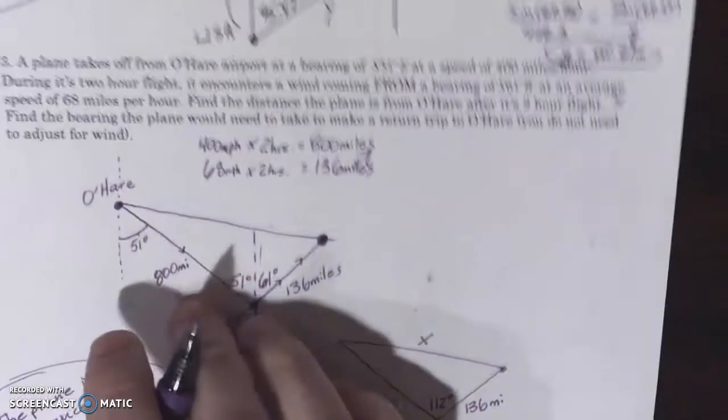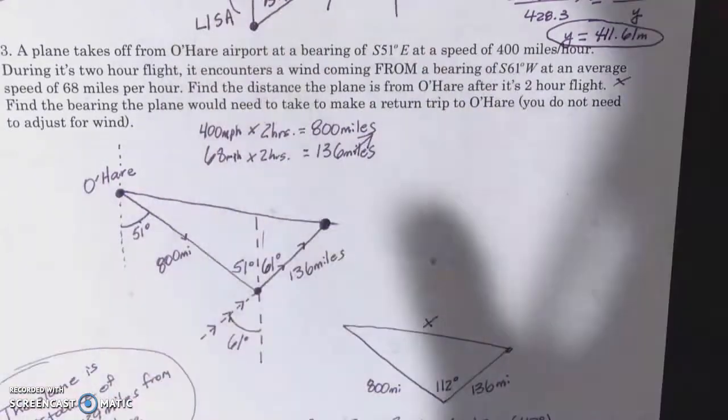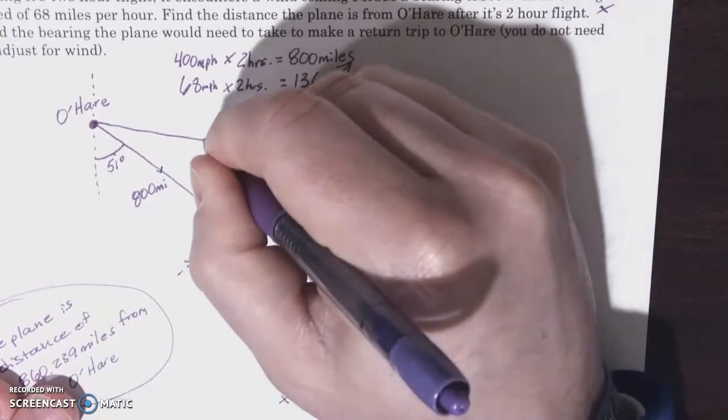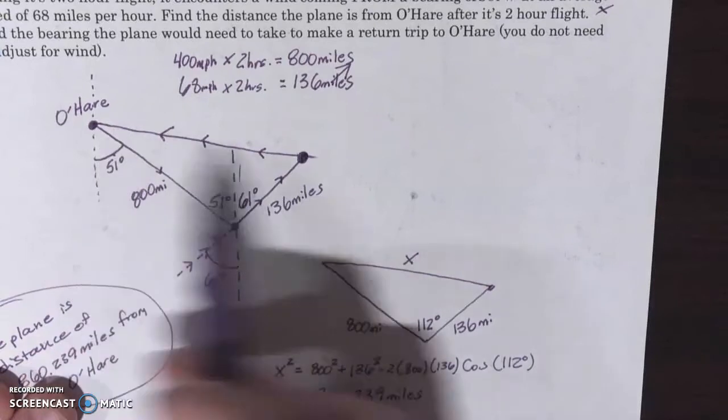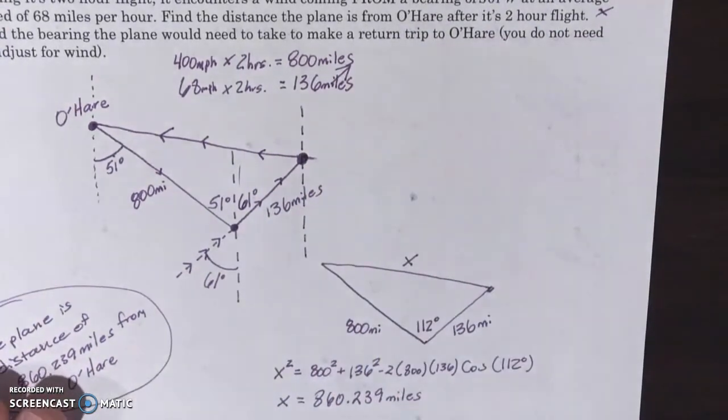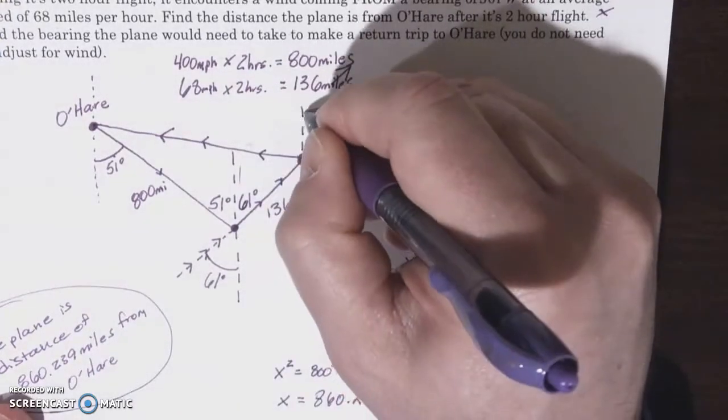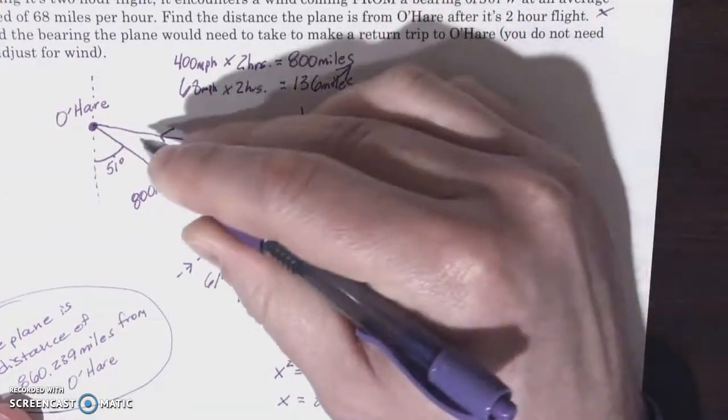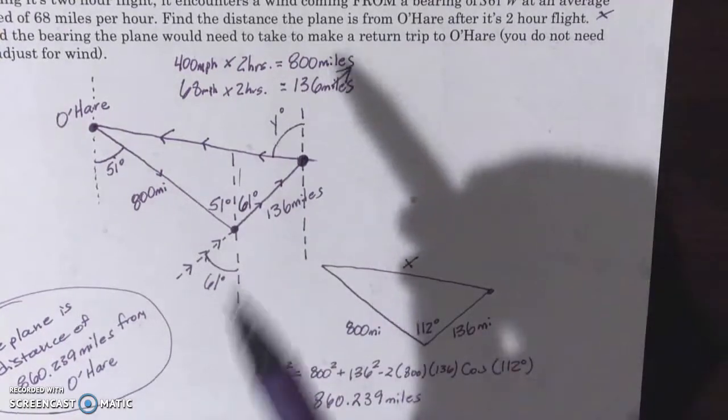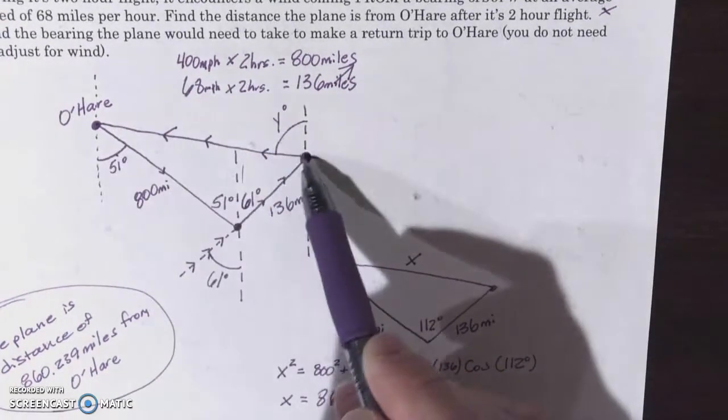Now it's also asking, the second question here is find the bearing the plane would need to take to make the return trip to O'Hare. And we're not going to adjust for the wind here. So if we were looking to make a return trip, if here's where we are now and here's O'Hare, what we want to do is find this direction as a bearing. And if we're going to find this direction as a bearing, we're going to need a vertical line of orientation. What angle are we looking for? Well, if this is our north-south line of orientation, then this is at a northwest angle here. So we really want to find this angle here. We're going to call that y degrees. If we can find that, our answer to this question would be this many degrees west of north would be what we would tell our plane to do to get back to O'Hare.